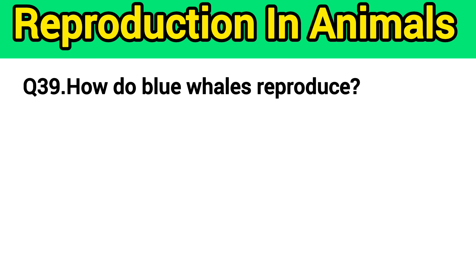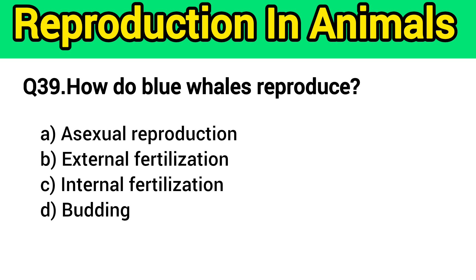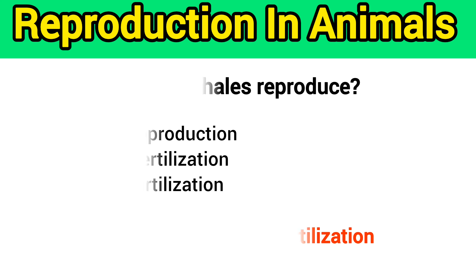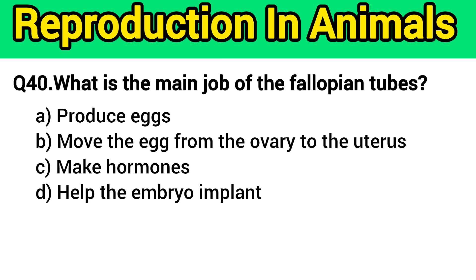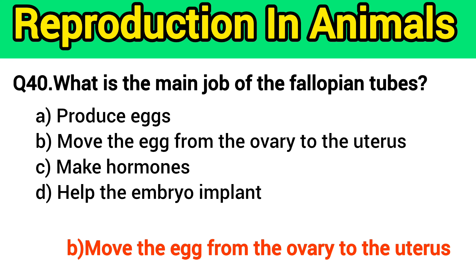Question number 39: How do blue whales reproduce? The right answer is option C — internal fertilization. Question number 40: What is the main job of the fallopian tubes? The right answer is option B — move the egg from the ovary to the uterus.